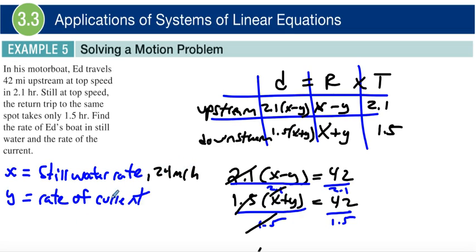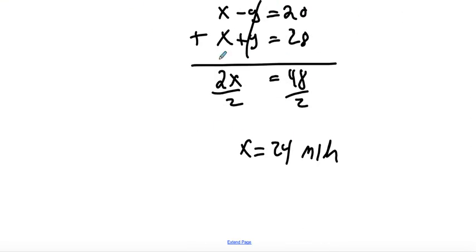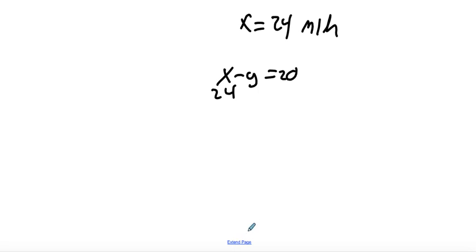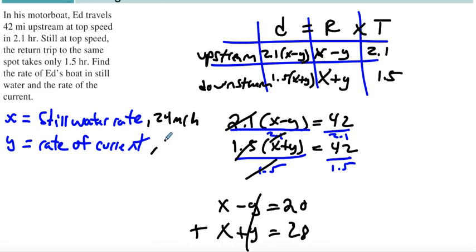Now what about the current? Well, we have an equation that we can use. We can just use x plus y or x minus y. So x minus y equals 20. We just plug in x for 24. 24 minus y equals 20. If I subtract 24, I get negative 4. I divide both sides by negative 1, so y equals 4. 4 miles per hour. So that means that our rate then right here was 4 miles per hour. There we go.